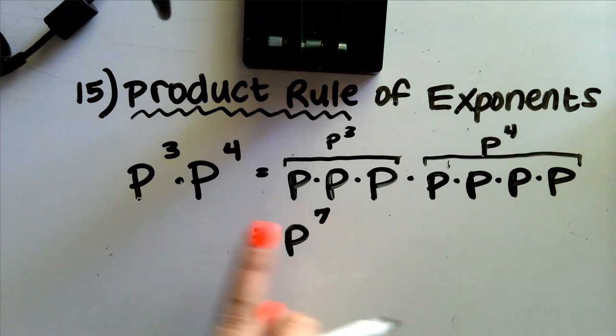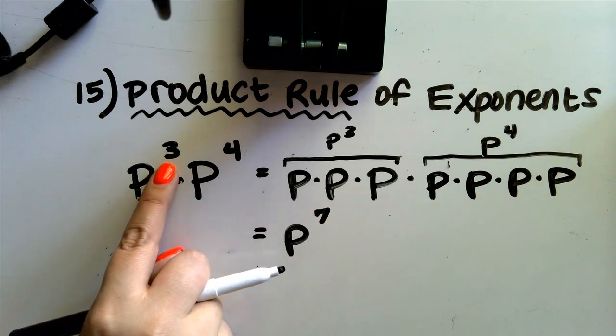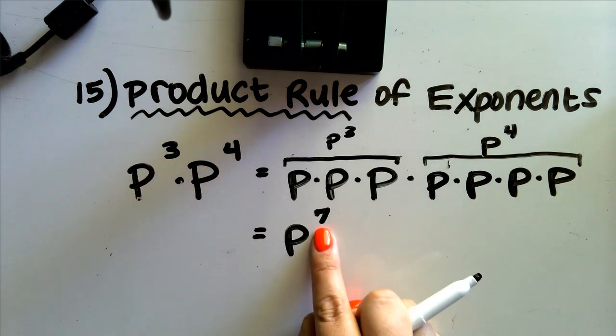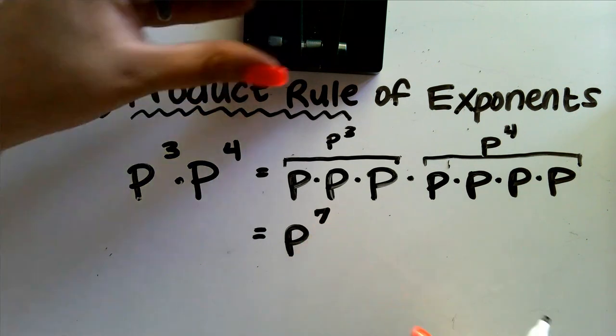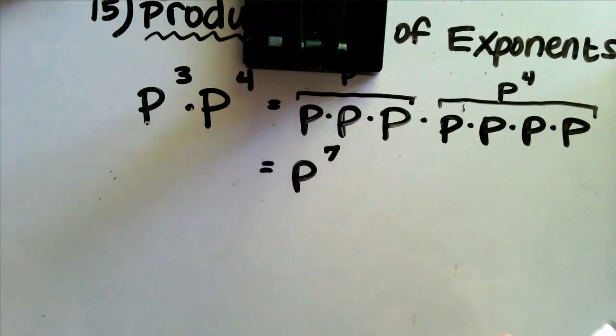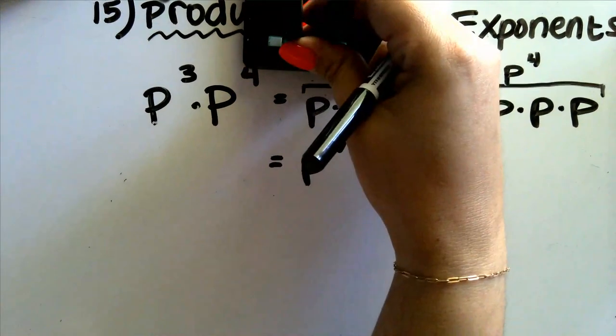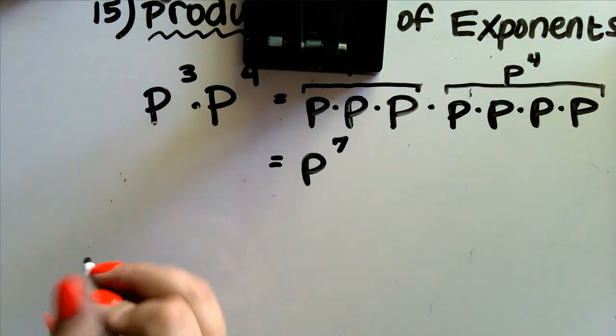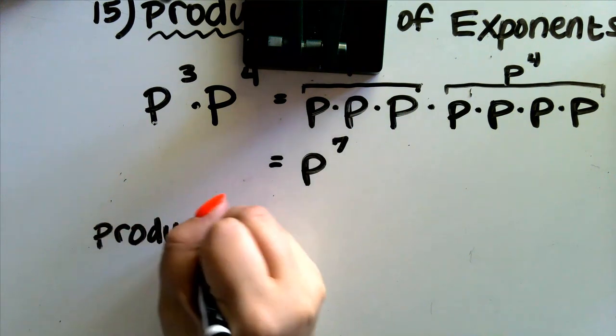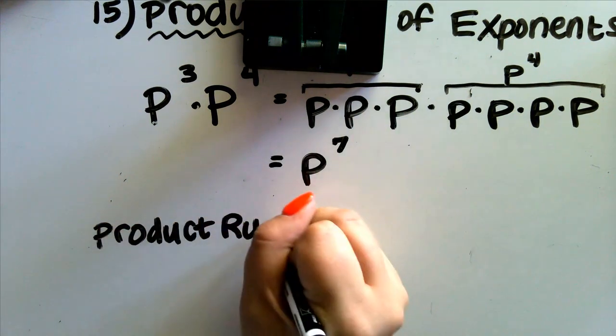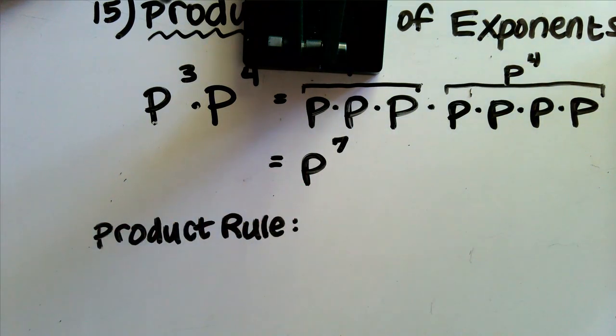What I want you guys to notice here is that our exponents, three and four, if you add those together, guess what you get? Seven. So let's go ahead and write down a rule for the product rule.